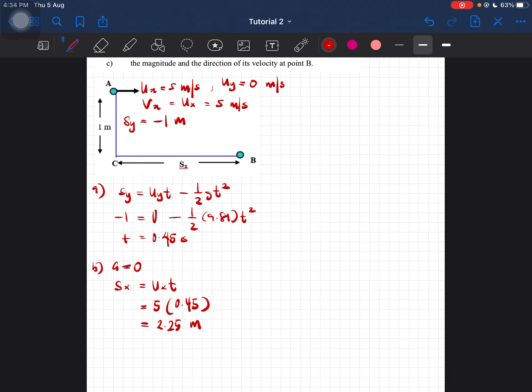Okay, now part C: the magnitude and direction of its velocity at point B. So at this point, we know that the final velocity is somewhat like this - vx, vy - and then we have to resolve it, which is v.